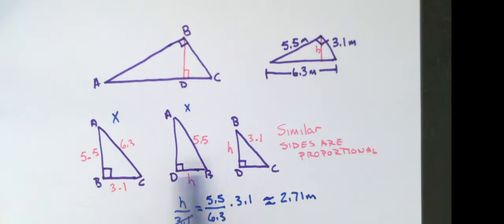So, that is how I would use it. Redraw triangles in the same orientation and set up proportionality statement using pieces you know and pieces you don't know. That's an easy way to find the altitude of that triangle.